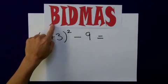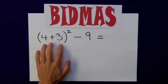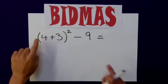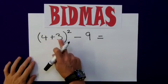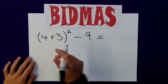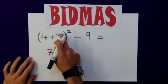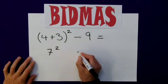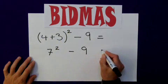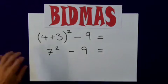So, using BIDMAS, the B, brackets, means that anything in brackets I need to do first. Well, here we have our brackets. 4 plus 3 must be done first. Well, that would equal 7. So rewriting what I've got, this equals 7, still squared, minus 9. It's equal to, and we'll carry it.